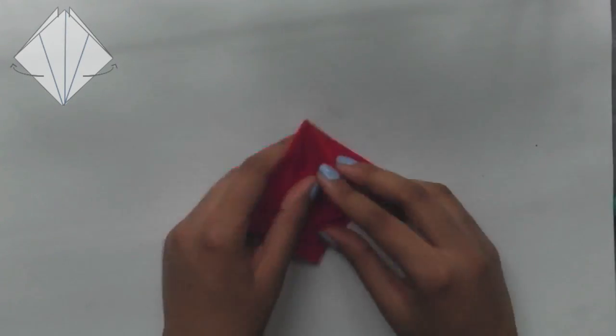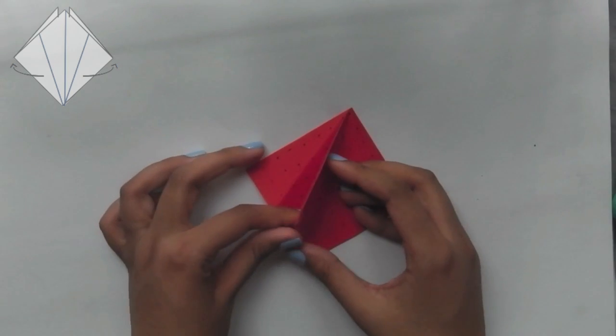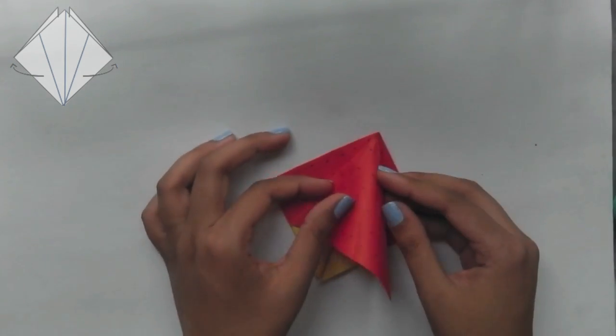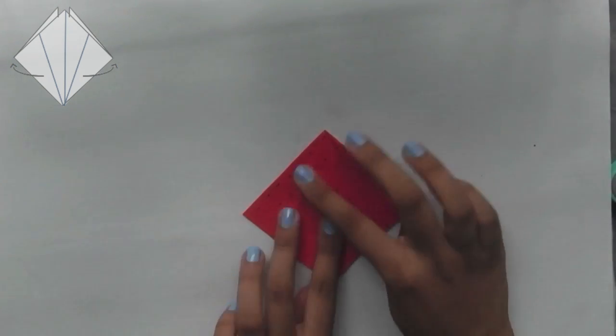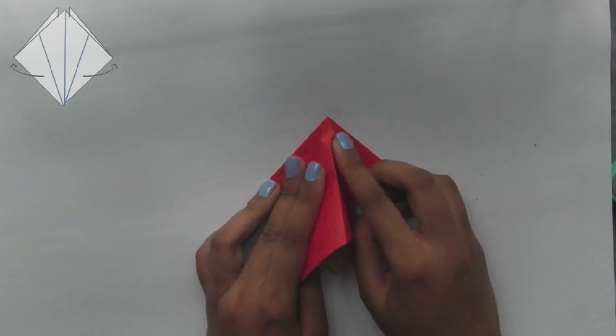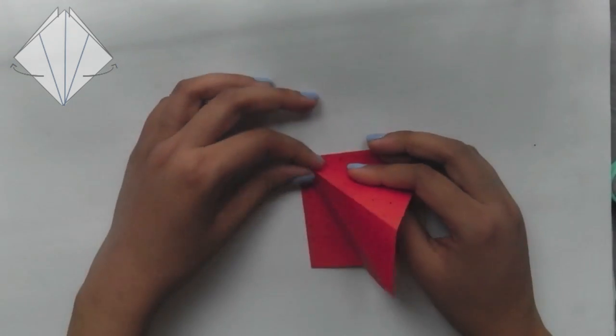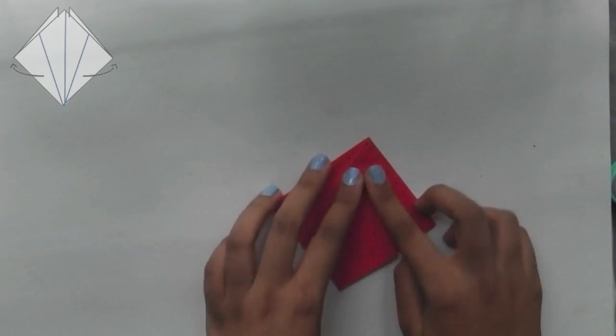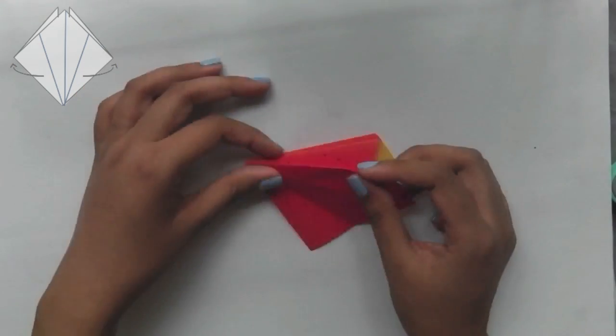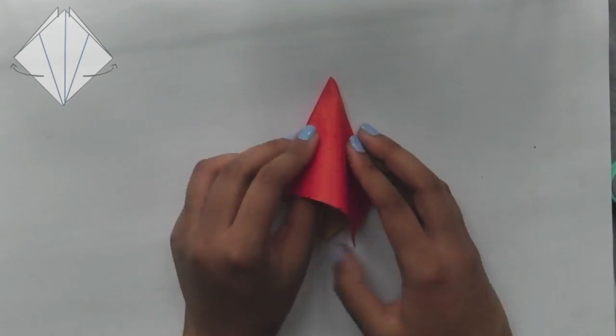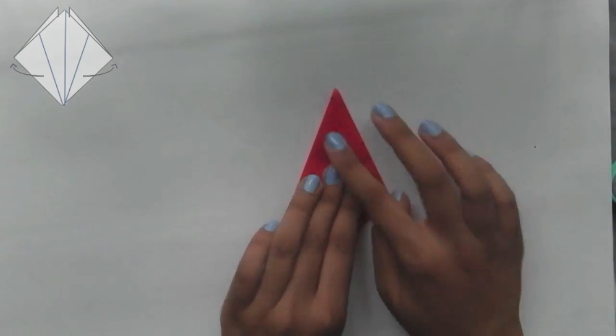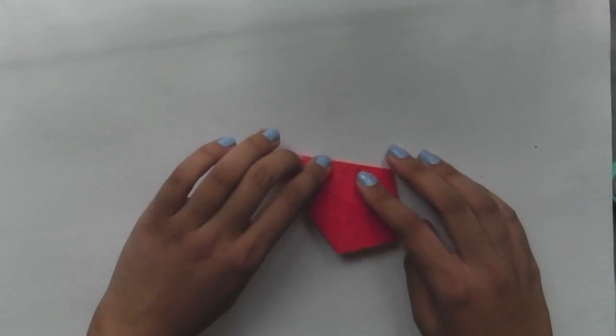Then open up the flap and fold in the flaps on both sides to create a kite shape.